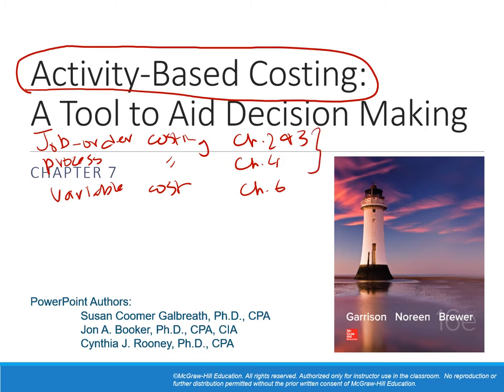These two — job order costing and process costing — belong to the same family which is absorption costing. It's called absorption costing because the product cost absorbs all the costs associated with production, whereas in variable costing the main difference compared to absorption costing is that the fixed manufacturing overhead was not considered part of the cost of goods sold.